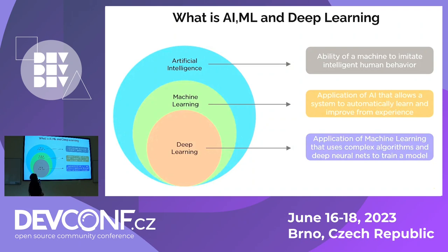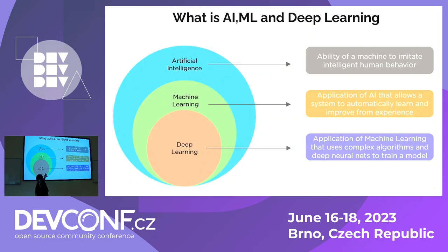Deep learning uses a neural network and performs tasks which are a little more complex, like recognition of image and speech. It simulates exactly the same way as the human brain works. So this is all about AI, machine learning, and deep learning.